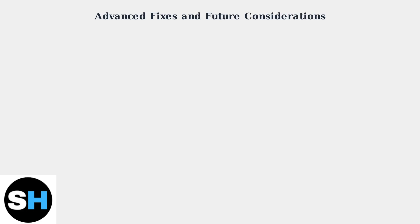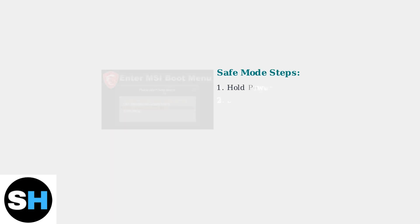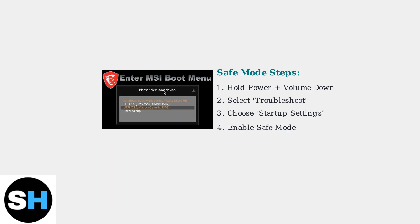When basic troubleshooting fails to resolve MSI Claw control issues, advanced diagnostic techniques become necessary to identify the root cause. Software conflicts are often the hidden culprit behind persistent control problems. These conflicts occur when background applications interfere with the MSI Claw's controller drivers. To identify software conflicts, boot your MSI Claw into safe mode. This loads only essential system drivers, isolating potential conflicts from third-party applications.